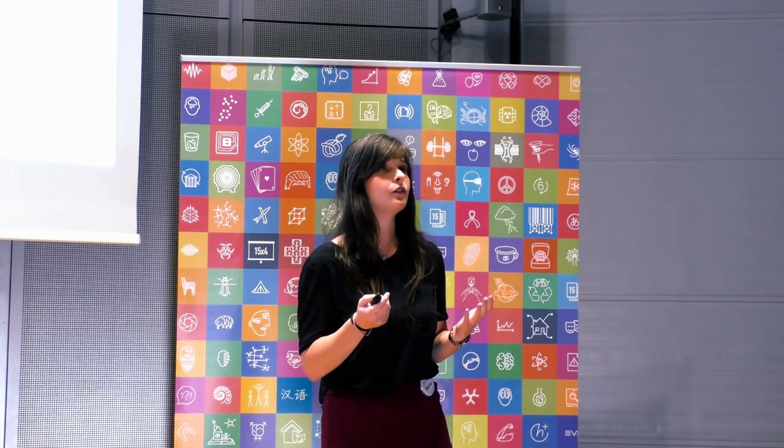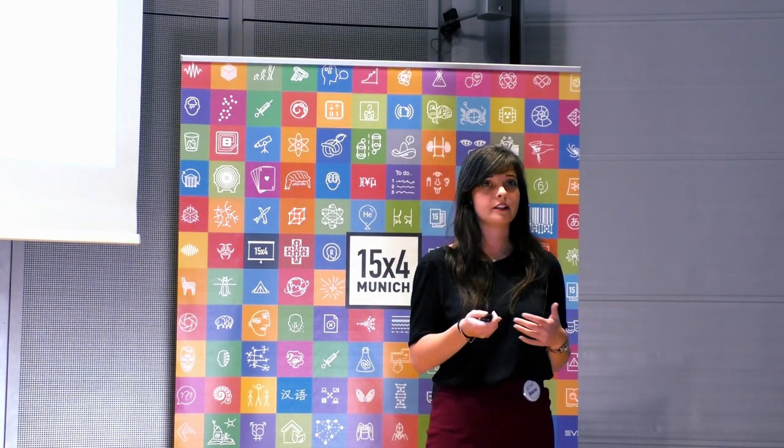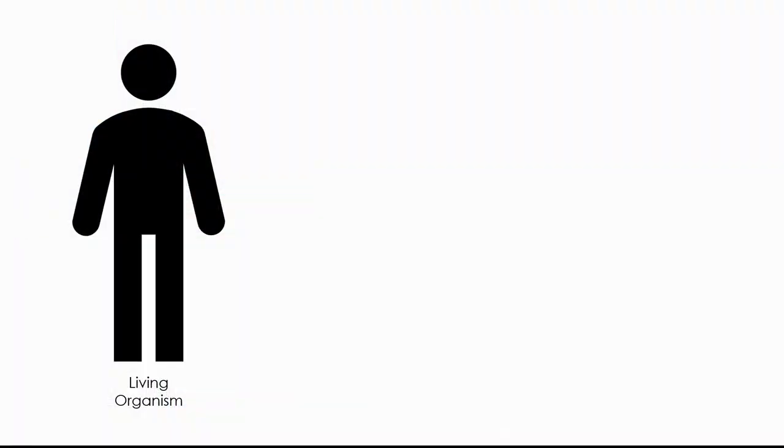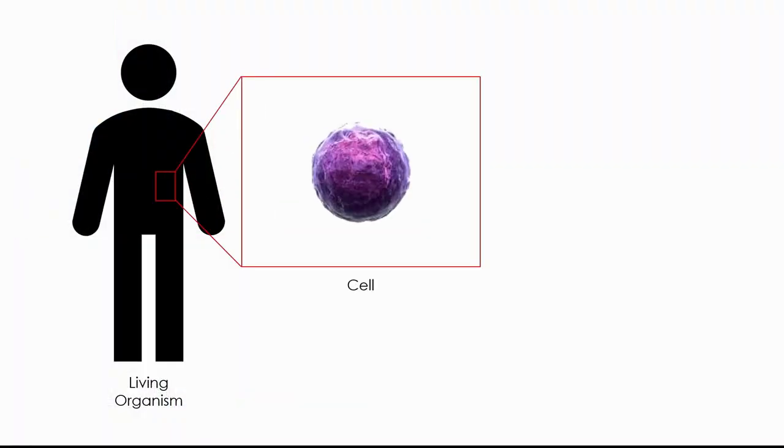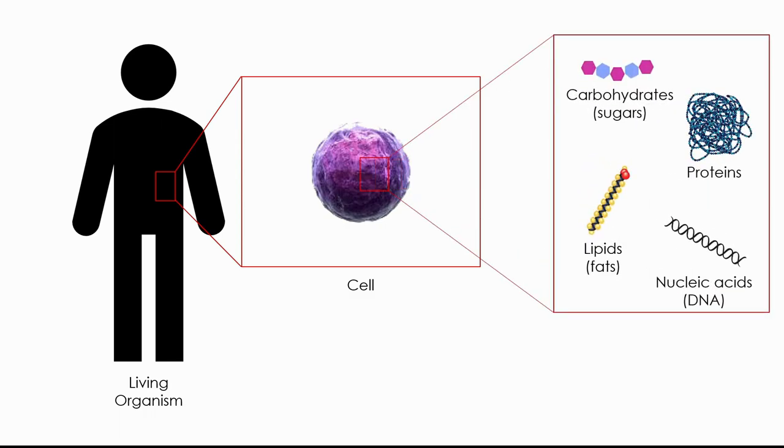So we'll be talking about Directed Evolution and Enzymes, so I'm just going to give you a brief background about the biology behind it. You're probably all familiar with the fact that every living organism on Earth is composed at a smaller level from what we call cells. When we focus inside the cells, we can identify four main components: carbohydrates, proteins, lipids, and nucleic acids.